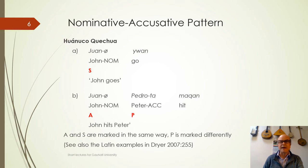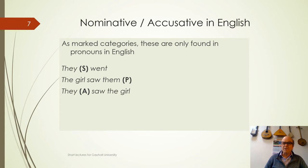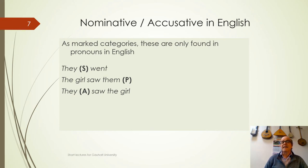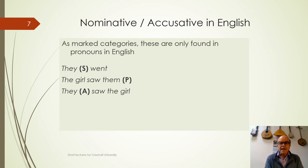That's called a nominative-accusative pattern. It's also found in Latin, in Sanskrit, and in English — but in English we only see it with pronouns. So: 'they went' — they is an S argument, single argument of an intransitive clause. 'The girl saw them' — them is a patient or object argument in a transitive clause. 'They saw the girl' — they is an agent argument, hence an A. In English, S is the same as A. The same holds for 'I went / the girl saw me / I saw the girl,' or 'she went / the girl saw her / she saw the girl.' S equals A.